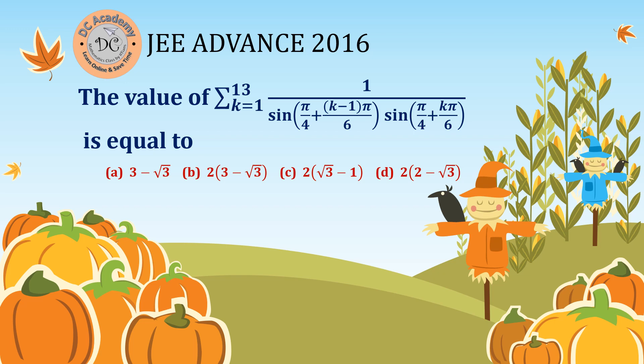In this video, we are going to solve a problem which appeared in GE ADVANCE 2016. We need to find out the value of a summation where the index variable k goes from 1 to 30, and the expression is in a trigonometric form. Let's go ahead and try to solve this particular problem in the solution section.